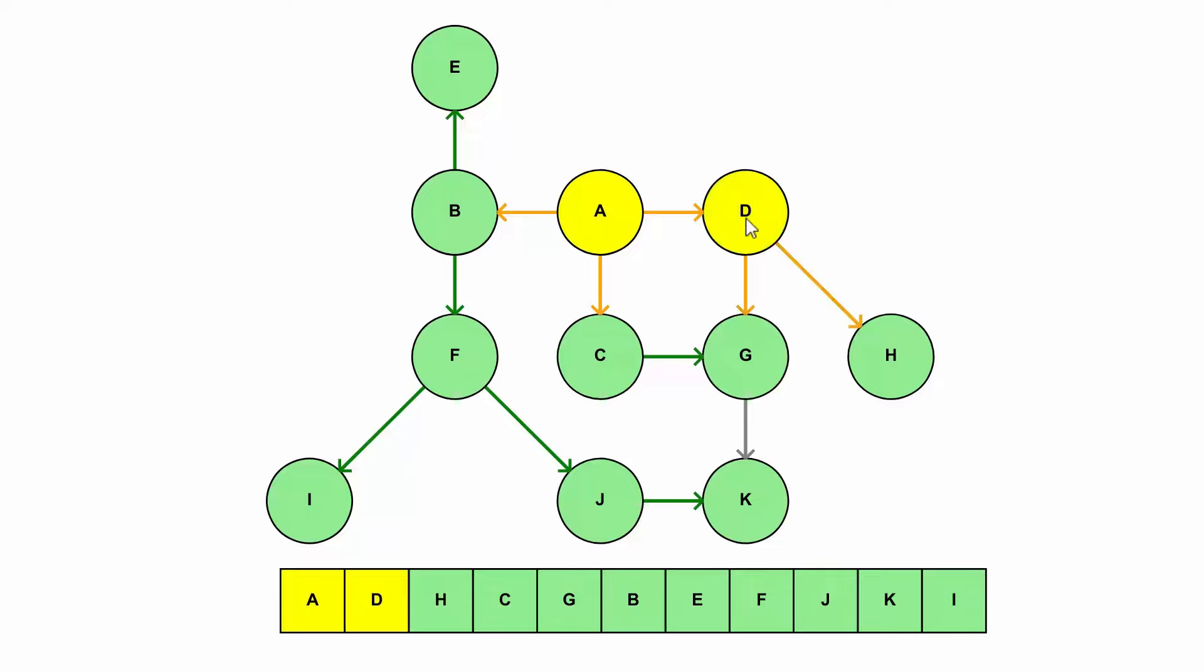So then we can do D, because it only has a dependency of A. So that's perfectly valid for us to do. And then now we can do H, which has a dependency of D, and C, still perfectly valid, G.